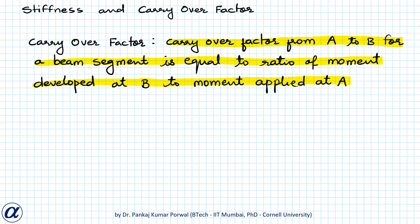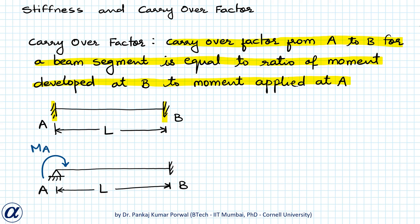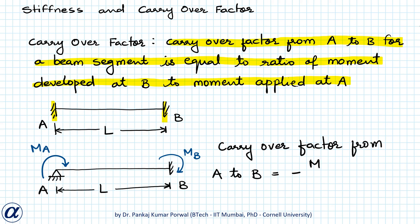We are again given a beam with both ends fixed. To find the carry over factor from A to B, we replace the fixed support at A by a pin support. We apply a moment MA at A, and because of this MA, some moment MB will develop at end B. The carry over factor from A to B will be minus MB upon MA.